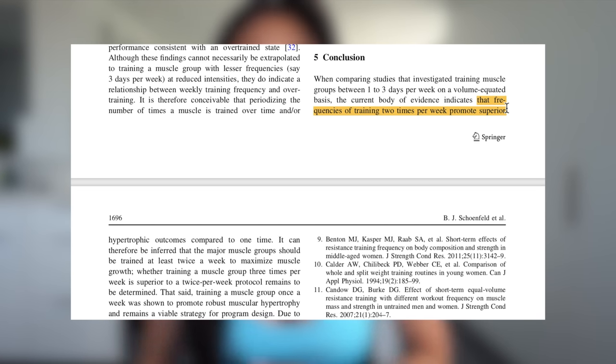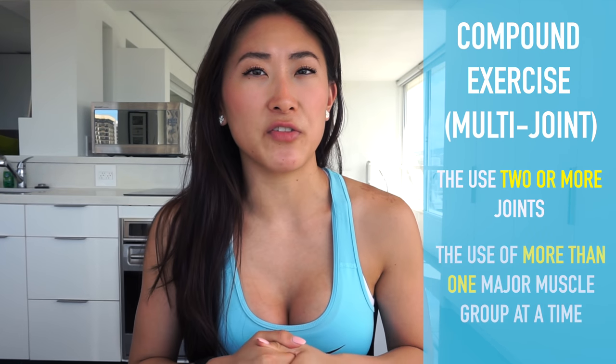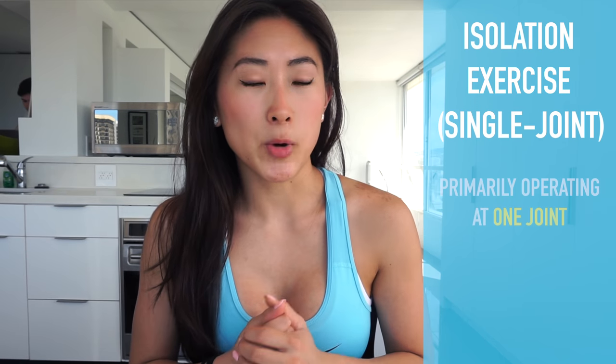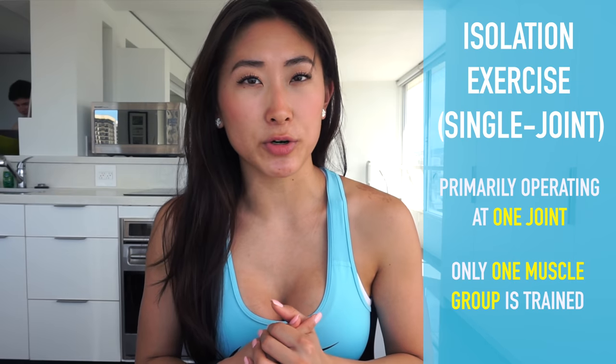They demonstrated that training frequencies of twice per week promoted superior hypertrophic outcomes to once a week. The second topic is compound versus isolation movements — the two groups that any exercise can fall into. A compound exercise, or multi-joint exercise, involves the use of two or more joints and more than one major muscle group at a time. An isolation exercise, or single-joint exercise, primarily operates at one joint and targets only one major muscle group.